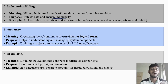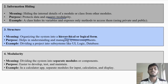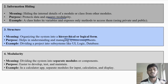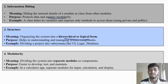Next is structure. Structure means organizing the system into a hierarchical or logical form. The purpose is it helps in understanding and managing system components. When you arrange things in a structured form, it becomes easy to understand and manage all the components. For example, dividing the project into subsystems like user interface, logic, and database.